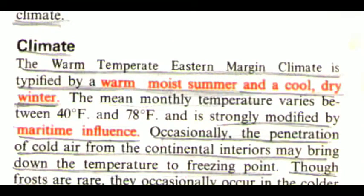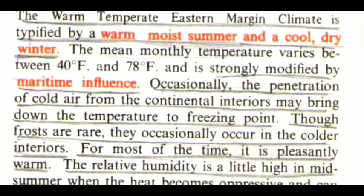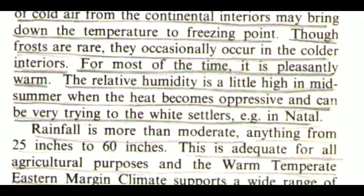The warm temperate eastern margin climate is typified by a warm moist summer and a cool dry winter. The mean monthly temperature varies between 40°F and 78°F and is strongly modified by maritime influence. Occasionally, the penetration of cold air from the continental interiors may bring down the temperature to freezing point. Though frosts are rare, they occasionally occur in the colder interiors. For most of the time, it is pleasantly warm.